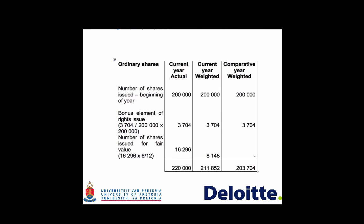A rights issue is a combination between shares issued for fair value — where resources have changed — and shares issued for no value, where resources have not changed. The shares issued for value need to be time-weighted and not restated in the prior year. The shares issued for no value, the bonus shares, do not need to be time-weighted, but need to be restated proportionately. In order to calculate the split of the 20,000 shares, the following calculation is done.